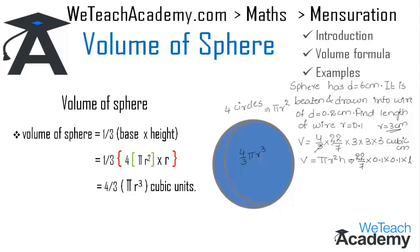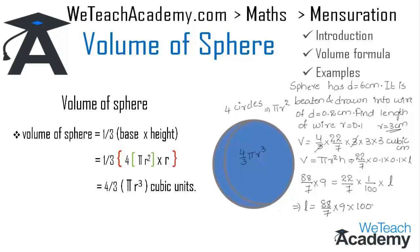Simplifying the sphere's volume: the 3s cancel and multiplying 4 × 22 gives 88/7 × 9. On the wire side, 22/7 × 0.01 — which we write as 1/100 — into l. To find l, we transfer the terms to the left-hand side, taking their reciprocal, giving l = 88/7 × 9 × 100 × 7/22.